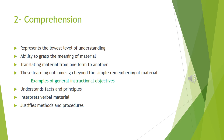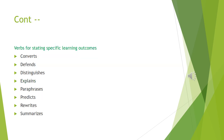The next category in the domain is Comprehension. It represents the lowest level of understanding. Comprehension is defined as the ability to comprehend the meaning of material. Examples of general instructional objectives at this level include: understands facts and principles, interprets verbal material, and justifies methods and procedures. At this level, specific learning outcomes can be stated with verbs like: converts, defends, distinguishes, explains, paraphrases, and predicts.